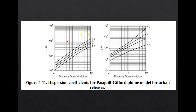The next figure shows the dispersion coefficient for the Pasquill-Gifford plume model for urban release. Same as the rural figure — you can read through your stability classes and distance downwind to find sigma y and sigma z. For urban release, stability classes A and B are grouped together, and E and F are also grouped together.